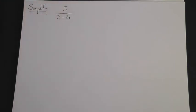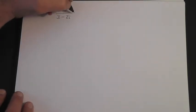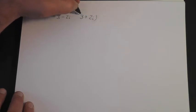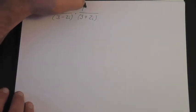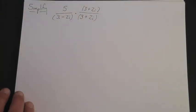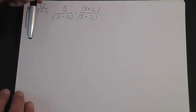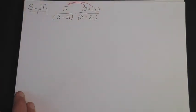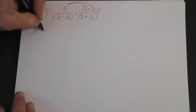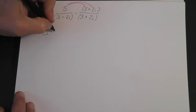So let's look at how we're going to use this. Simplify 5 divided by 3 minus 2i. What we're going to do is multiply the denominator by its complex conjugate, which is 3 plus 2i. If we multiply the denominator by 3 plus 2i, we have to multiply the numerator by 3 plus 2i as well — this is the trick that gets the i out of the denominator. Multiplying the numerator: 5 times 3 is 15, and 5 times 2i is 10i.